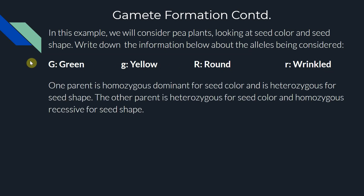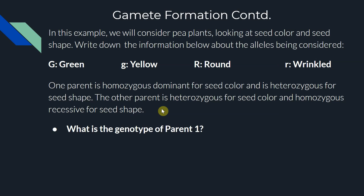In our example, parent one is going to be homozygous dominant for seed color and heterozygous for seed shape. Parent two is going to be heterozygous for seed color and homozygous recessive for seed shape. Make sure you keep track of what type of genotype applies to which trait. Seed color uses the G letters and seed shape uses the R letters — your answer should be four letters. Go ahead and pause the video and figure out the genotype for parent one.